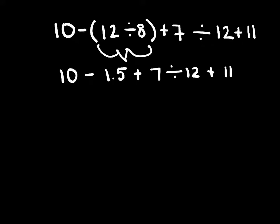We have no more parentheses left. We have no exponents. Next is M and D, multiplication and division. We don't have any multiplication. However, we do have division here with this 7 divided by 12. So that's going to be our next step.